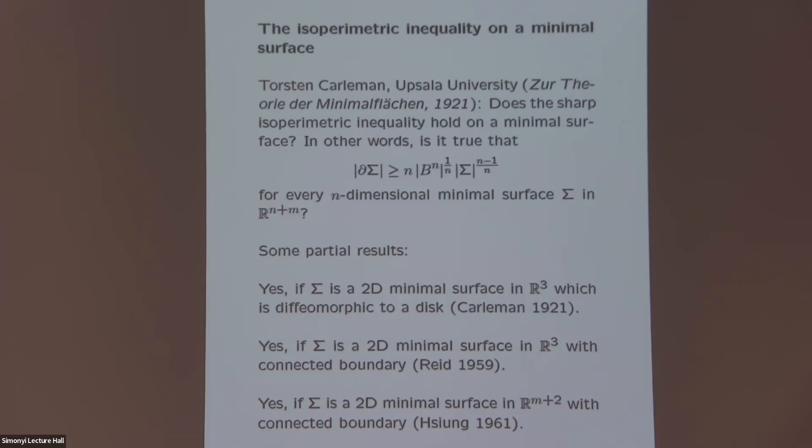Mathematicians have developed many different techniques to study isoperimetric inequalities. This includes symmetrization techniques, techniques from optimal transport, the so-called ABP technique that will come up later in this lecture, and also techniques from the calculus of variations.